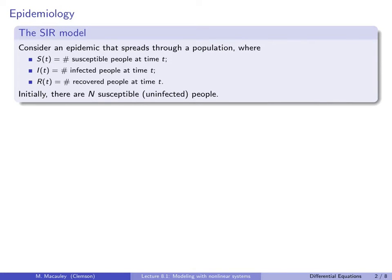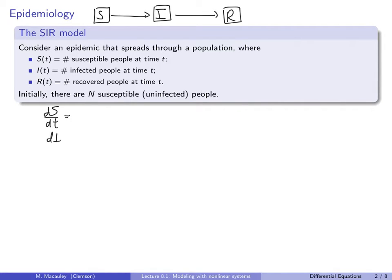Let's write down some differential equations. People transition between these states: you start in the susceptible state, transition to the infected state, and then transition to the recovered state. So let's write down equations for dS/dt, dI/dt, and dR/dt. Starting with dS/dt — the rate of change of the susceptible population — this is going to be negative because nobody is entering this state and everybody is leaving. The people who are leaving are the ones who are getting sick.